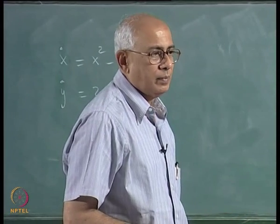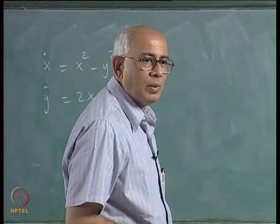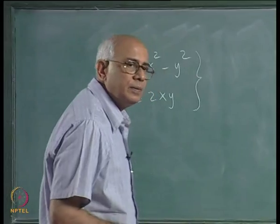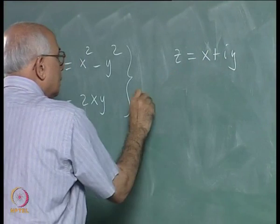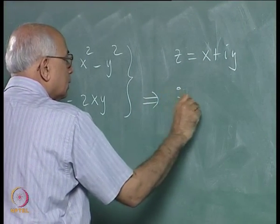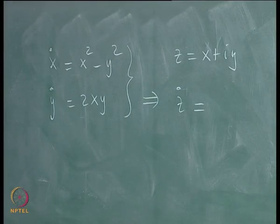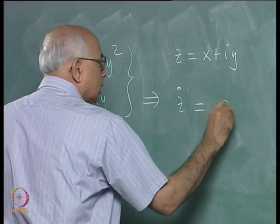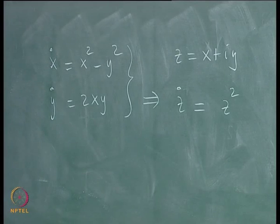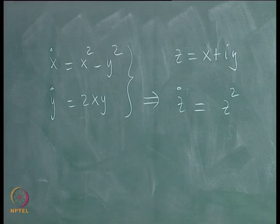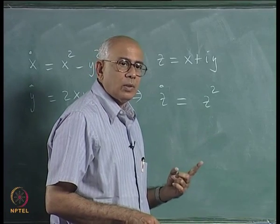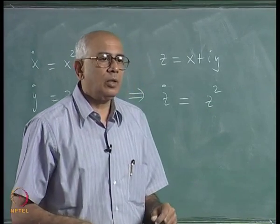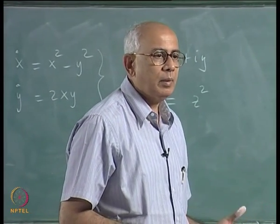It is immediately clear that the origin is a critical point, but there are no linear terms on the right-hand side, and therefore this is intrinsically a higher order critical point at the origin. What kind of critical point is it? If you write z equal to x plus iy and regard it as a complex variable, this set of equations implies z-dot equal to z². So the singularity at the origin is such that if you took a circuit once around in the z-plane, the argument of z² changes by 4π rather than 2π.